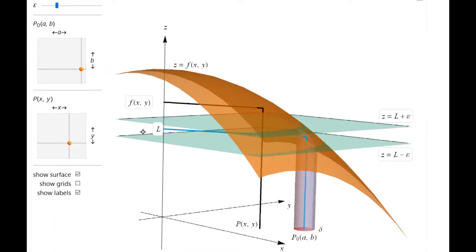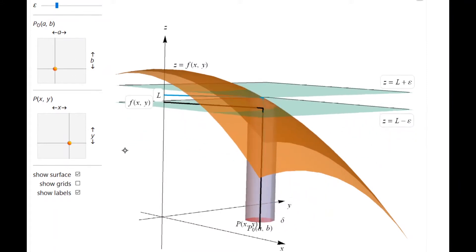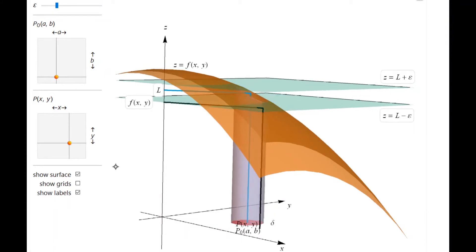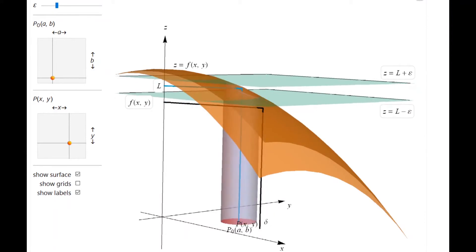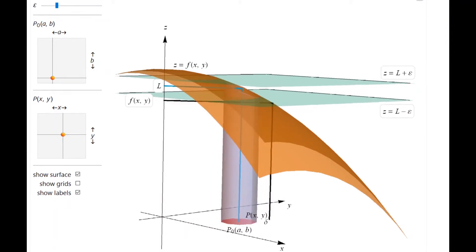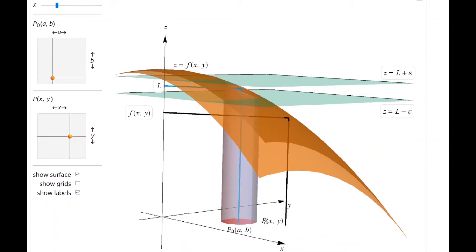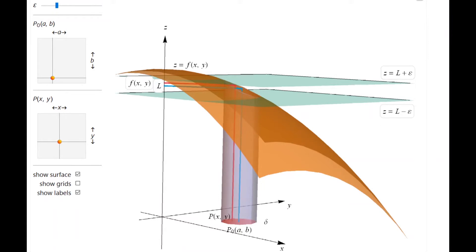We can also vary A and B. Here's a different point (a,b): as x and y approach a and b, if the point is within that pink circle, then the function will be within the bounds L minus Epsilon to L plus Epsilon.